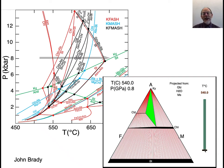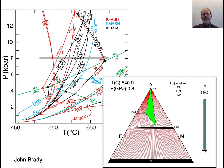To get back to AFM diagrams, just to recap a little bit here: we've already talked about the petrogenetic grid, which is this series of reactions, and the AFM diagram, where the AFM diagram changes as a rock undergoes some systematic change in pressure and temperature. At a fixed pressure of 8 kilobars and increasing temperature, we can see the changes in assemblages.